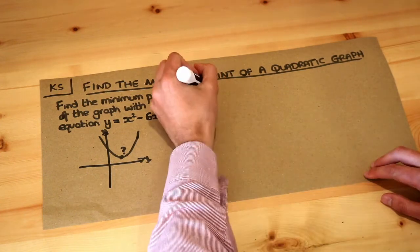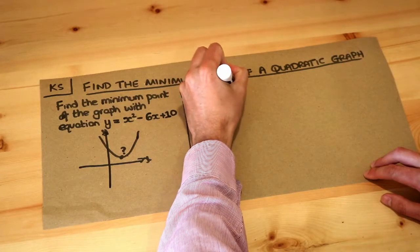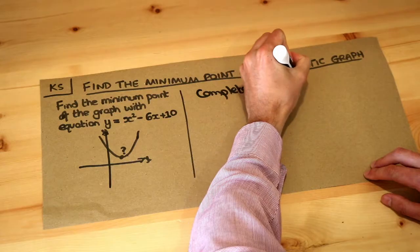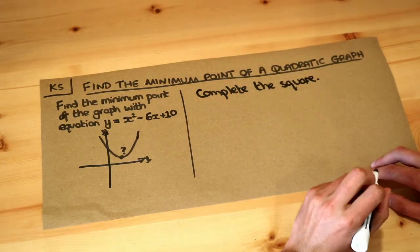The key point is to complete the square, and then once we've completed the square, we'll work out what we do with that and how that relates to the minimum point of the graph.